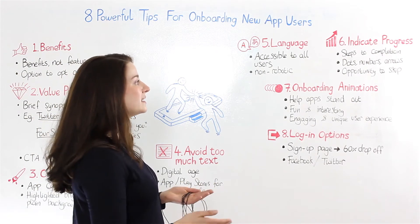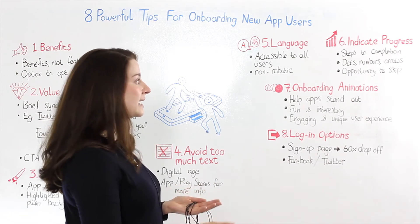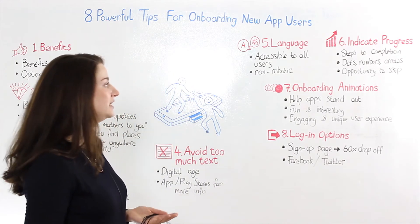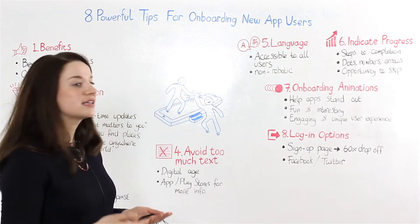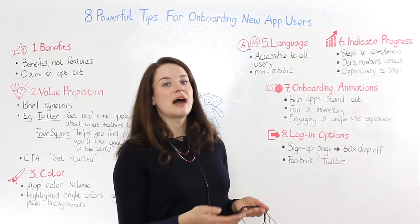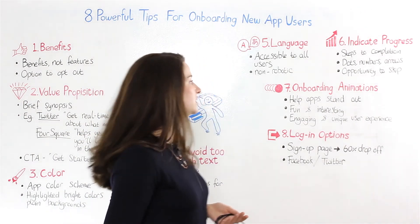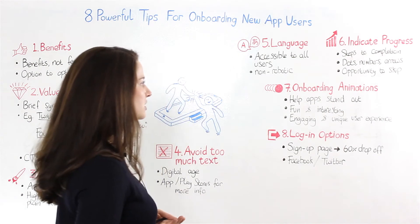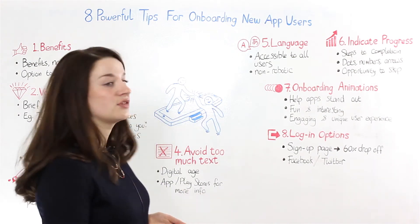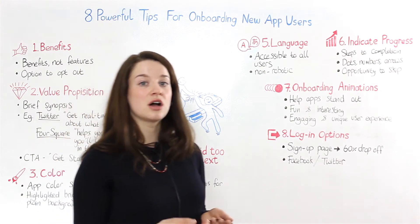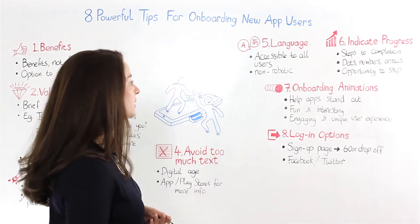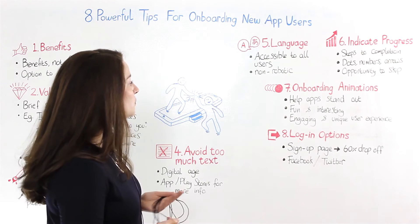Number six: you want to indicate the progress. Tell your users how many steps they have to completion. This is often illustrated with dots, numbers, and arrows at the bottom of each page of the onboarding process. Also, give the opportunity to the user to skip or opt out at any point through the onboarding.